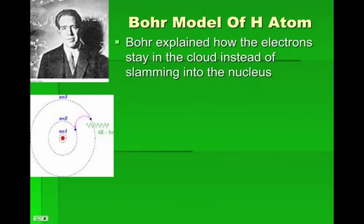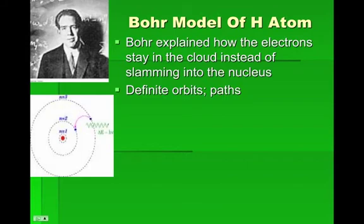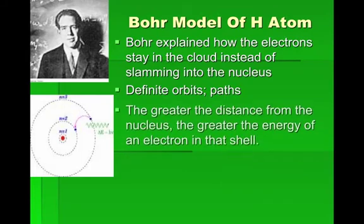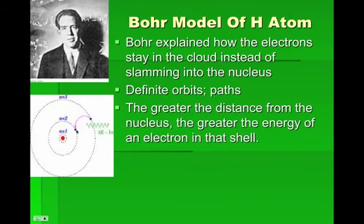Bohr came up with the idea that electrons orbit around the nucleus the same way planets orbit around the sun. It's the centrifugal force of the electrons orbiting that prevents them from slamming into the nucleus. He used the word 'orbit' and said electrons follow very specific orbits. The farther the electron was from the nucleus, the greater its energy in that particular shell — a shell being just another name for an energy level.